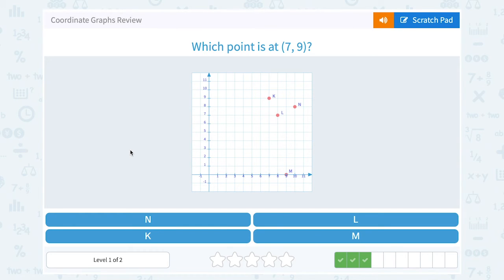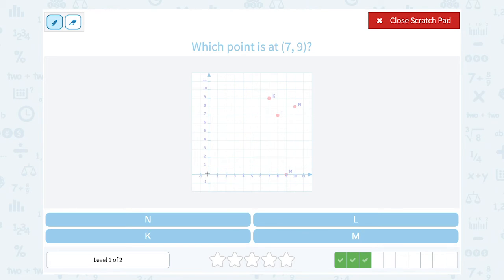Which point is at (7, 9)? Okay, well (7, 9) tells us to move 7 to the right or over to the 7 on the x axis, and then up 9 or in line with the 9 on the y axis. So I can see that puts me right at point K.